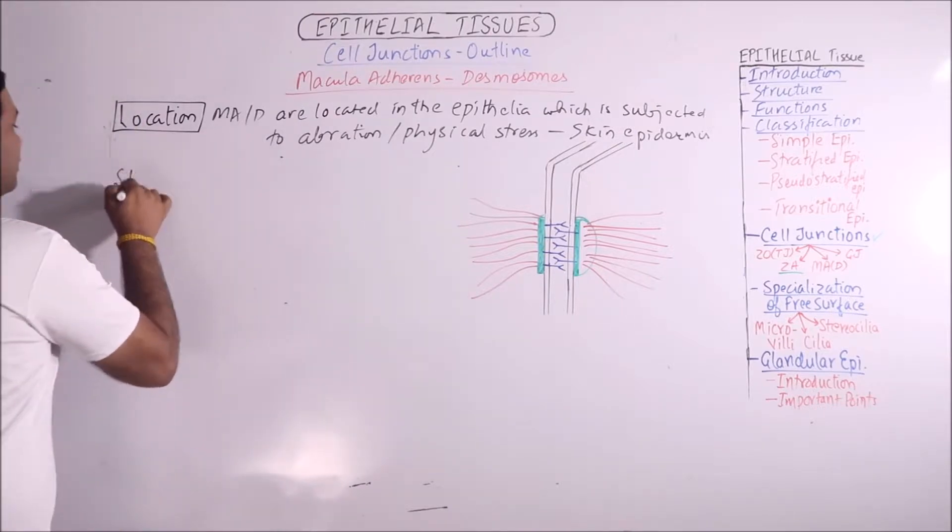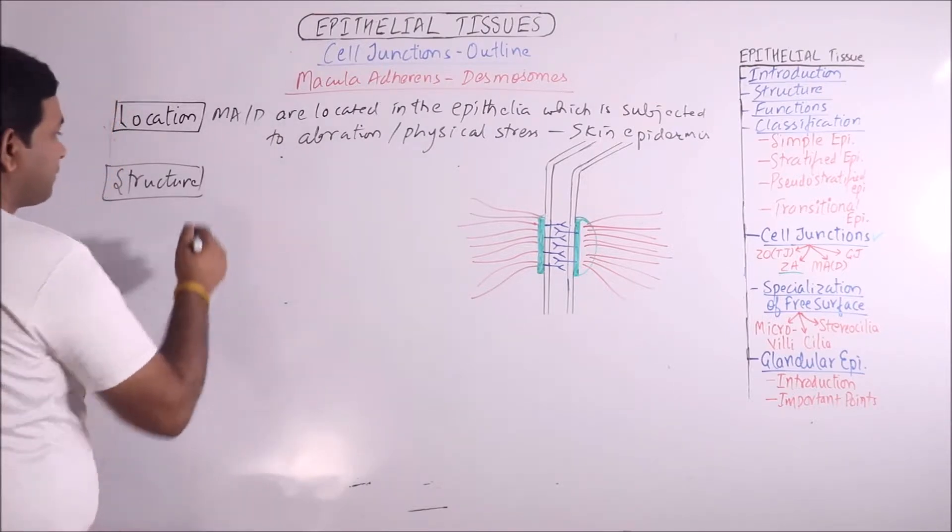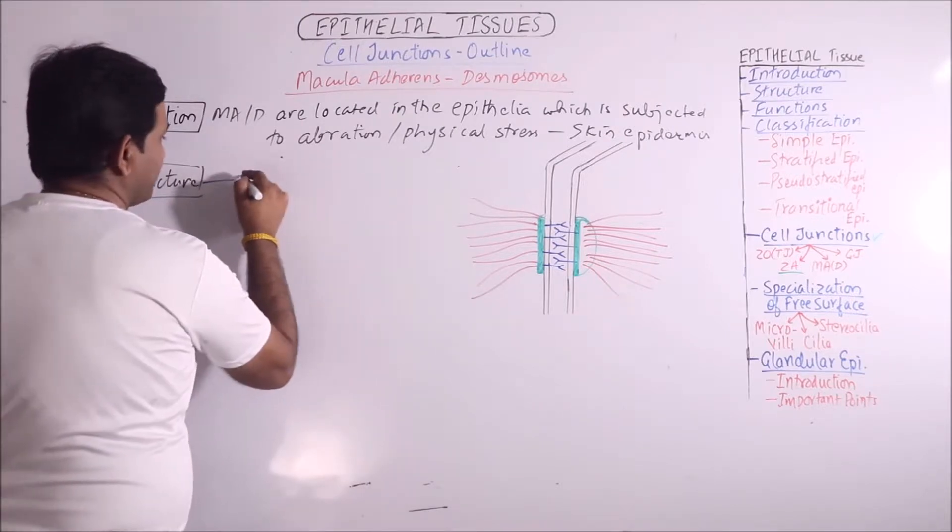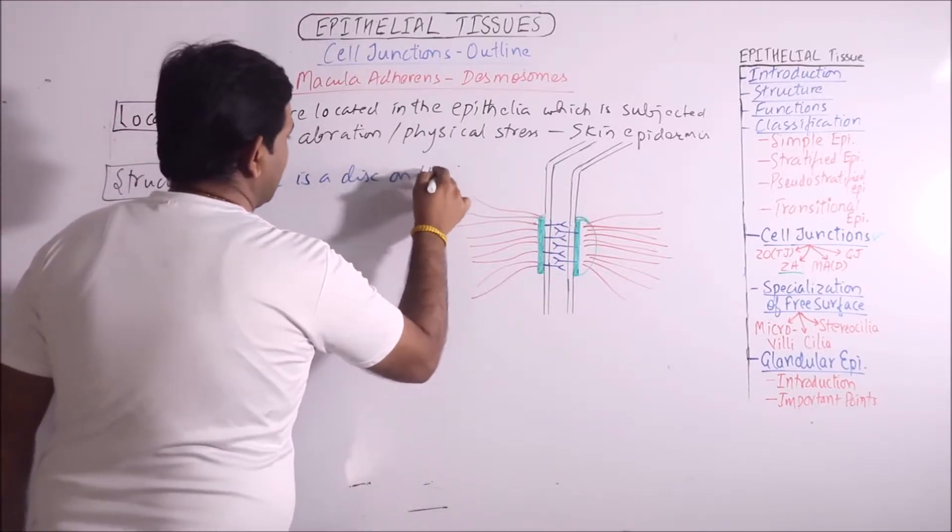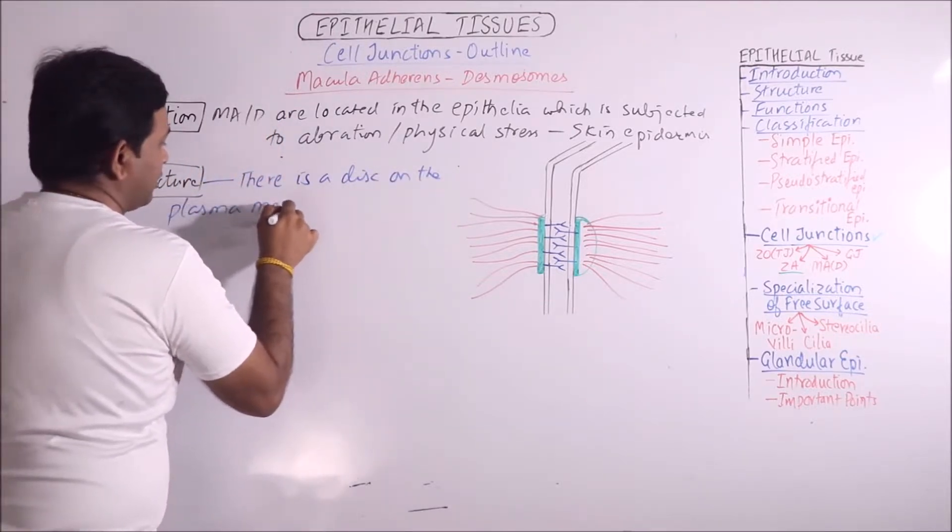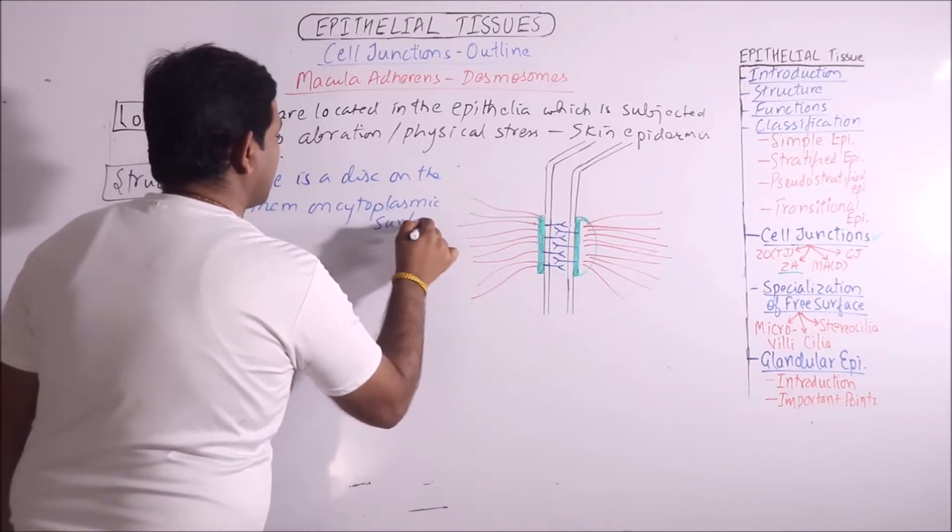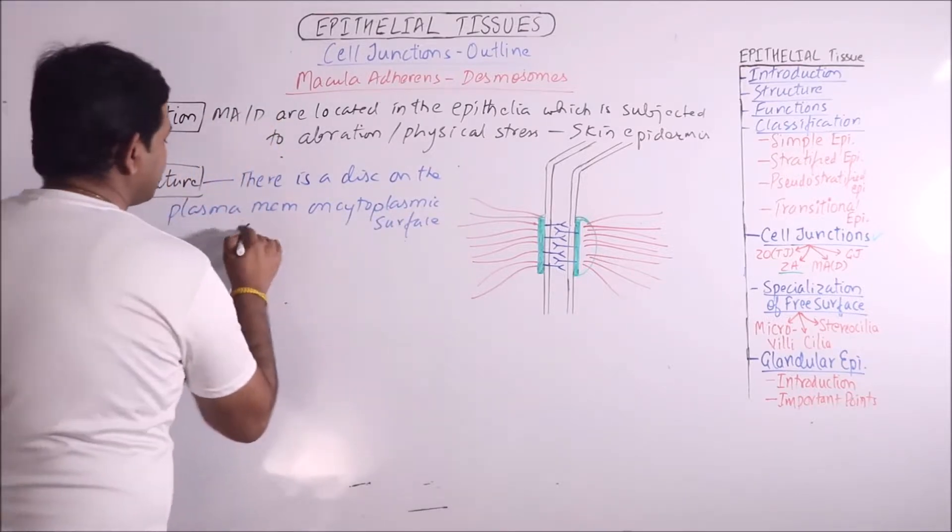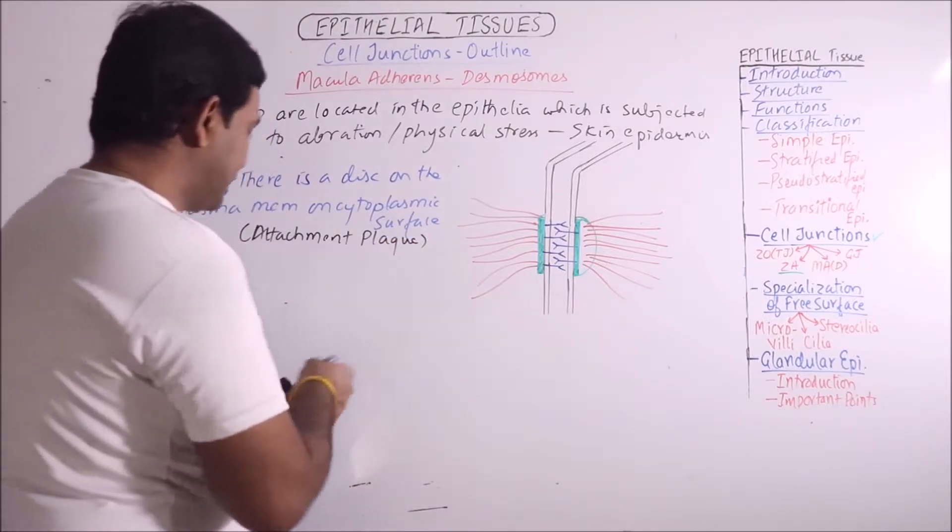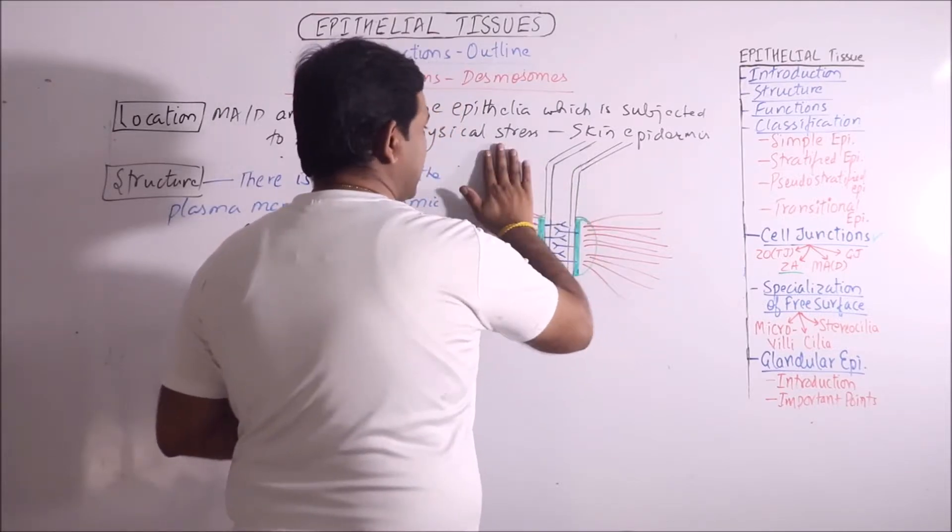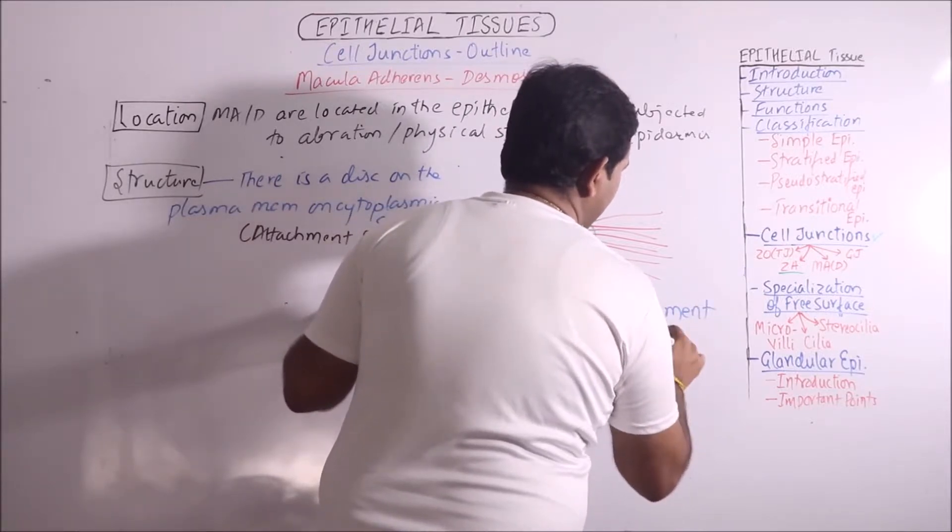Then structure. Now the structure is somewhat different from zonal adherence. There is a disc on the plasma membrane on cytoplasmic surface. This disc is known as attachment plaque. In the diagram we can observe that these are the two plasma membranes cell 1 cell 2 and this is what we say attachment plaque.